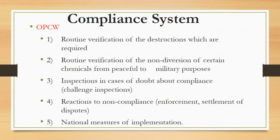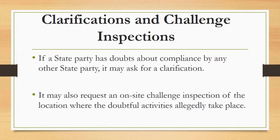The compliance system consists of a number of different elements including: routine verification of destruction as required; routine verification of the non-diversion of certain chemicals from peaceful to military purposes; inspections in case of doubt about compliance; reactions to non-compliance; national measures of implementation; and clarifications and challenge inspections. If a state party has doubt about compliance by another state party, it may ask for clarification or request an on-site challenge inspection of the location where the doubtful activities allegedly took place.